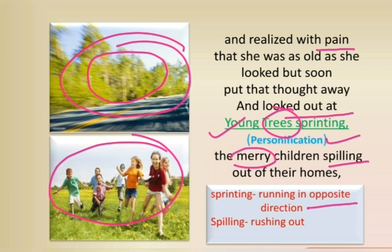The young trees sprinting and merry children spilling represent a contrast to the mother sitting beside her. Mother is old but the trees are young; mother is dull, tired, and weak but the children are merry and enthusiastic. So when the poet tries to look out of the car window to avoid the painful thought of her aging mother, she realizes the world outside is in contrast to her mother's condition. This again brings back the pain and fear that she is going to lose her mother because of old age and death.